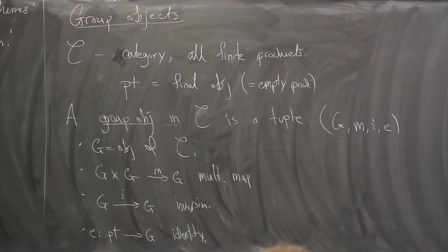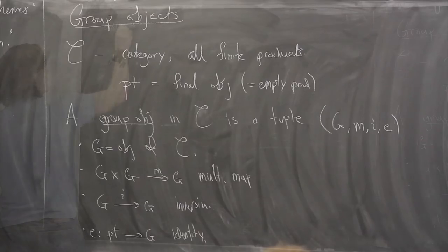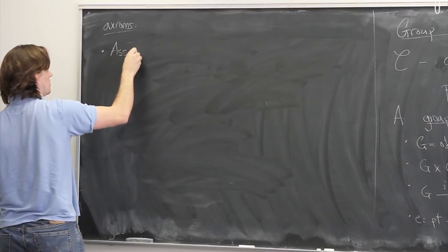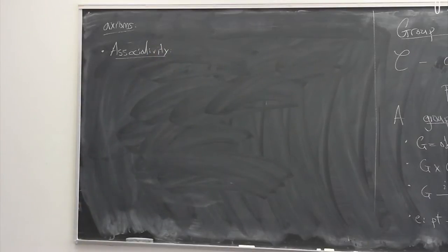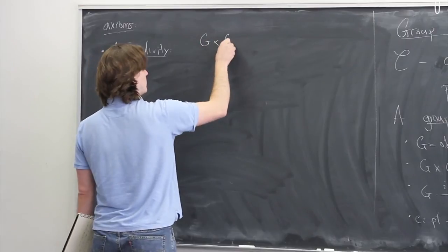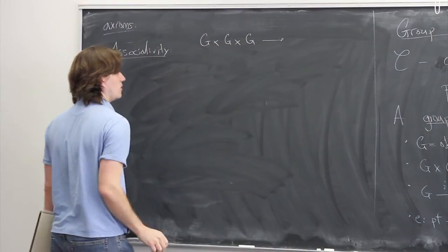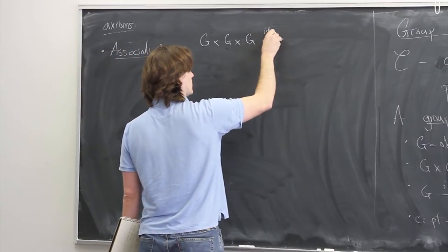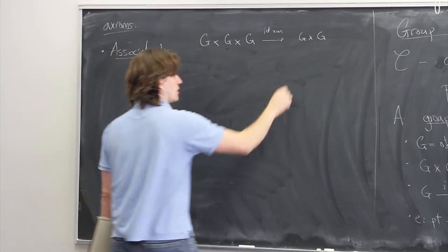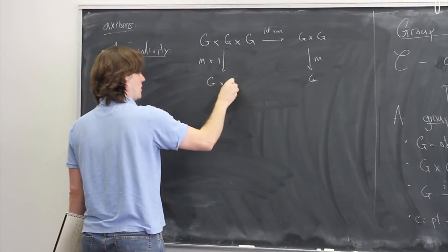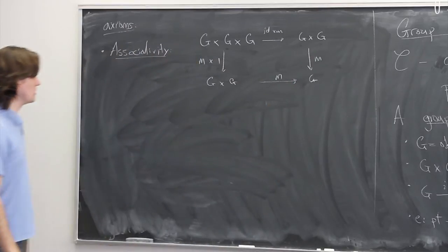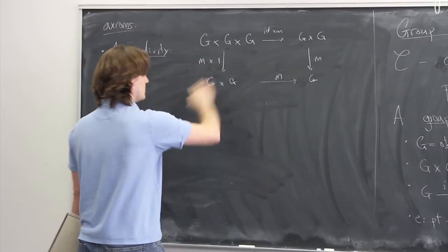There are some axioms. You want associativity of the multiplication. The trick to these axioms is to think about the normal axioms for a group and write them down without elements. So associativity means that if we do a triple product with three elements X, Y, Z, we can first multiply Y and Z and then multiply X and the result, or first multiply X and Y and then multiply the result, and this diagram commutes.